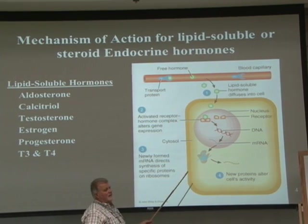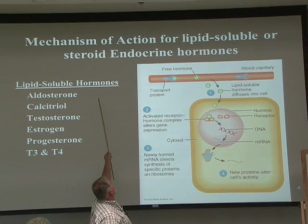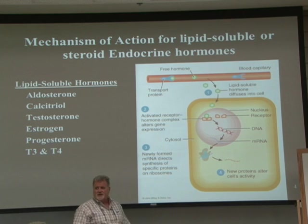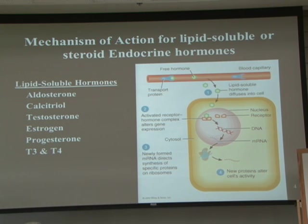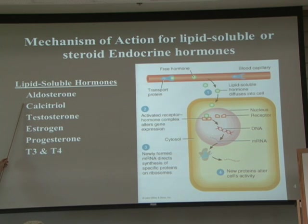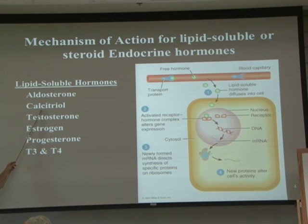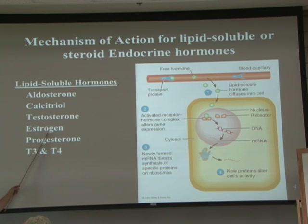The key to understanding lipid-soluble hormones is they all work through gene expression. Examples include aldosterone, which controls sodium production and removal in the kidney, and calcitrol. The classic steroid hormones — lipid-based hormones — are testosterone in men, estrogen in women, progesterone in women, and T3 and T4, which are thyroid hormones.